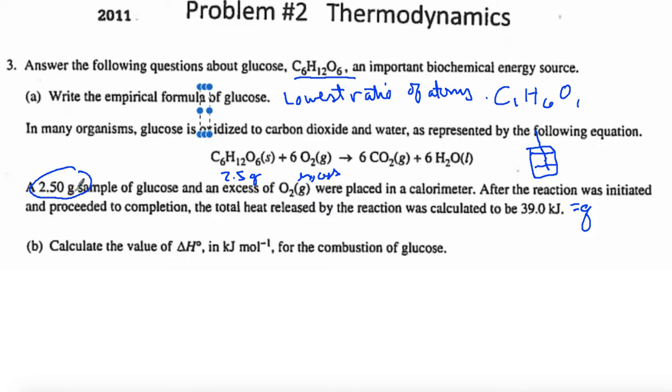When we get our Q here, it's going to be for 2.5 gram sample, but that is not a mole of sample. So we need to do some dimensional analysis. We have 2.50 grams of glucose, and we know 180 grams is one mole. That's going to tell us that we have 1.39 times 10 to the negative 2 moles of glucose.